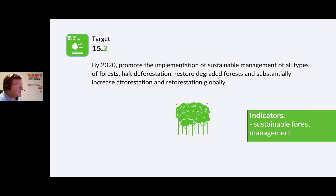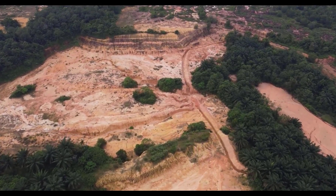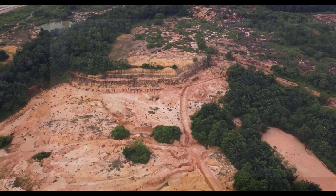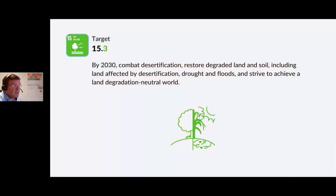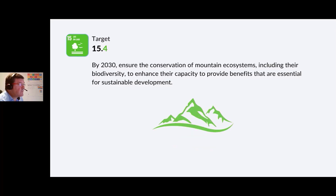The indicator for Target 15.2 is progress towards sustainable forestry management. Target 15.3: By 2030, combat desertification — that's creation of deserts from regular land — restore degraded land and soil, including land affected by desertification, droughts and flood, and strive to achieve a land degradation neutral world. This goal looks at an approach that counterbalances the expected loss of productive land with the recovery of degraded areas. The indicator is the proportion of land that is degraded over the total land area.